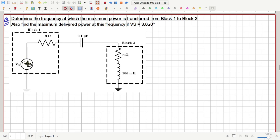The average power of a capacitor or an inductor is zero. So, whatever power comes out from block 1 that will be completely consumed by this 8 ohm resistance which is in block 2. Now, how much is the power consumed by this resistor?